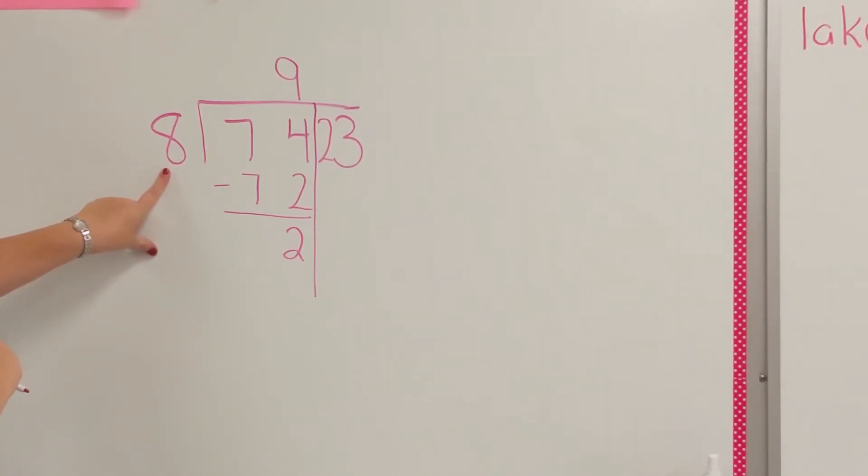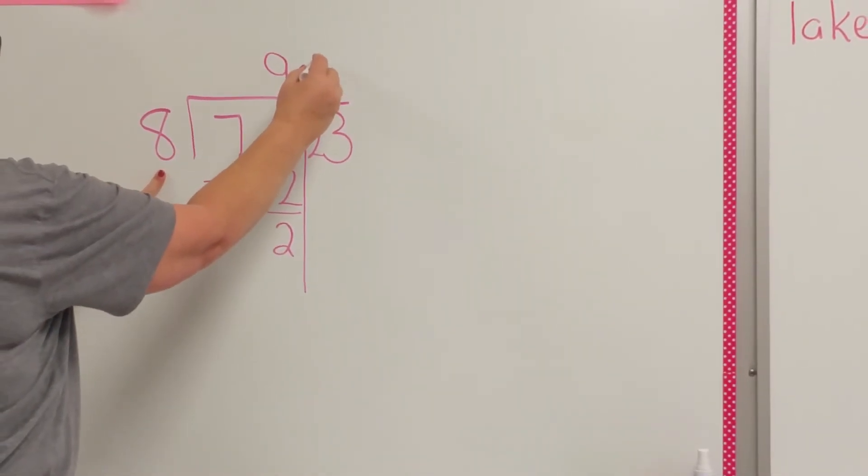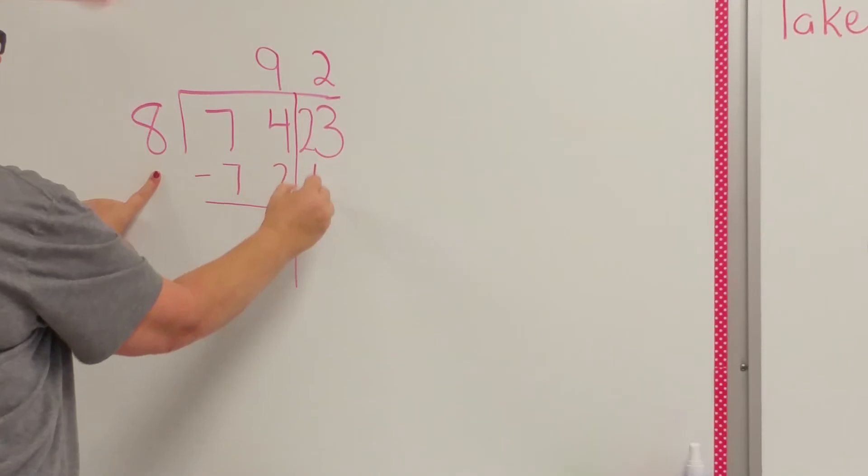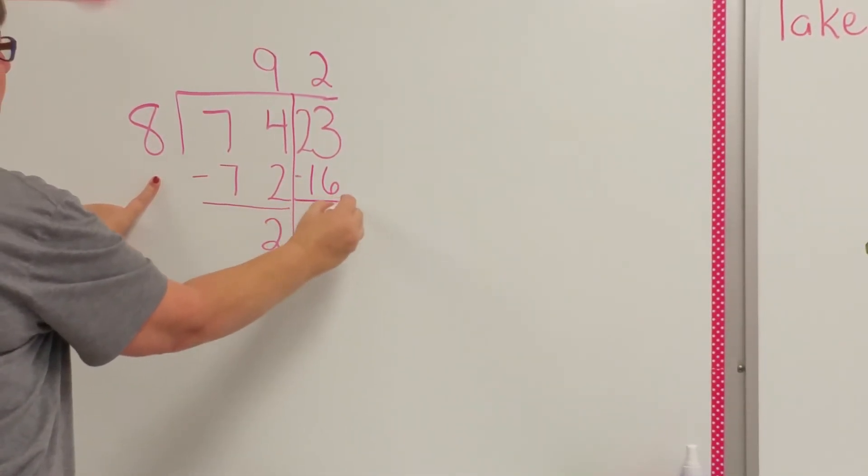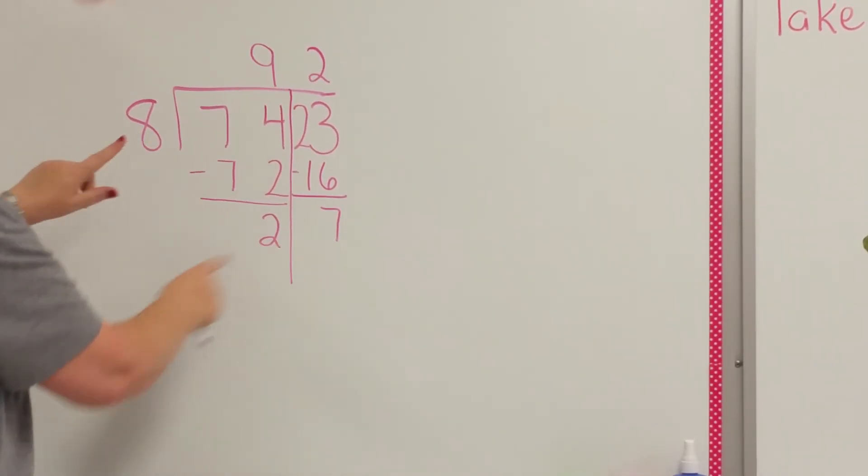8 times what gets me close to 23 without going over? 8 times 2 is 16. I subtract. I check my remainder is smaller than my divisor.